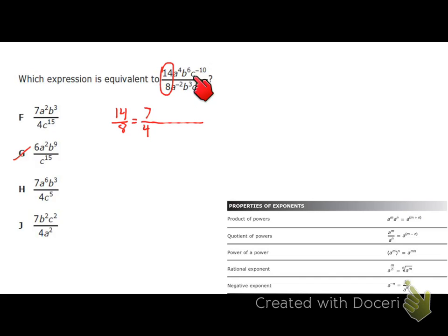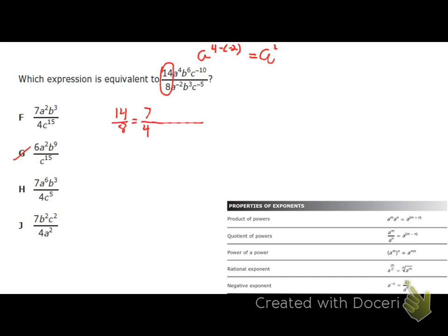Now let's look at the actual variables: a over a, b over b, c over c — we're dividing, so we use the quotient property. Whenever you're dividing with the same base, you subtract the exponents. For a to the fourth over a to the negative second: 4 minus a negative 2 is the same as 4 plus 2, which gives a to the sixth in the numerator. For b to the sixth over b to the third, subtracting exponents gives b to the third.